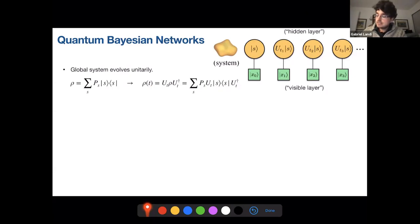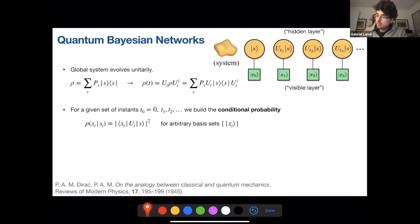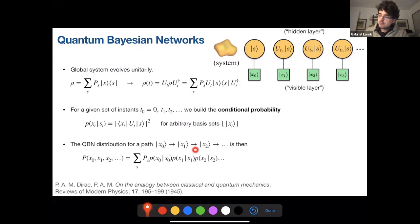And in the language of Markov chains, we would call this a hidden layer, but then we want to associate to these states some probabilities of finding the system in different quantum states X0, X1, X2, and so on. So we define conditional probabilities, which are the conditional probabilities that the system is found in some state X of T, given that at time T, it was in the state UTS. And these are arbitrary quantum states. And so from this, we can actually construct a distribution for a path, so a path of going from X0 to X1 to X2 and so on, which is just given by a sum over the initial probabilities times these transition probabilities. So the probability that it's in X0 at time 0, X1 at time 1, X2 at time 2, and so on. So we just build this object.